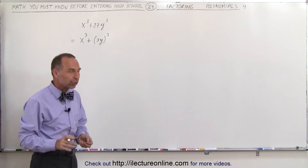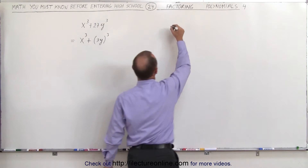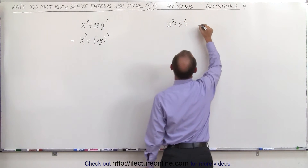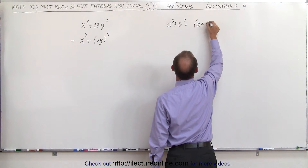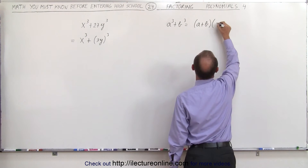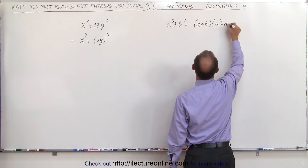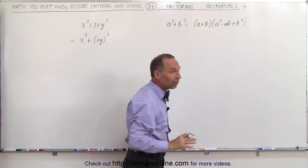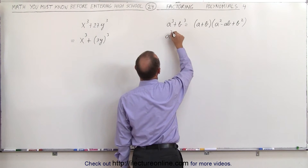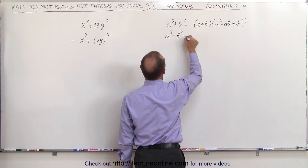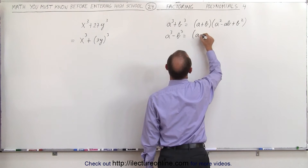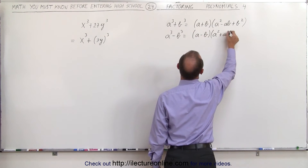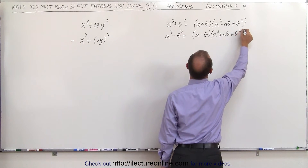And whenever we have the sum of cubes, it can be factored as follows: a cubed plus b cubed can be written as the quantity a plus b times a squared minus ab plus b squared. Likewise, if we had the difference of cubes, a cubed minus b cubed, that would be written as a minus b times the quantity a squared plus ab plus b squared.